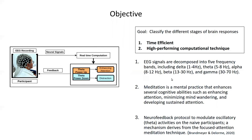Meditation has been an effective tool to enhance attention and minimize mind-wandering. High power of theta and alpha has been observed in previous studies during practicing meditation. Therefore, a neurofeedback protocol is developed to modulate oscillatory activities on the NAP participants. This is one example for real-time neurofeedback.